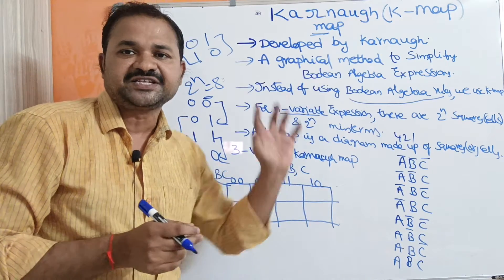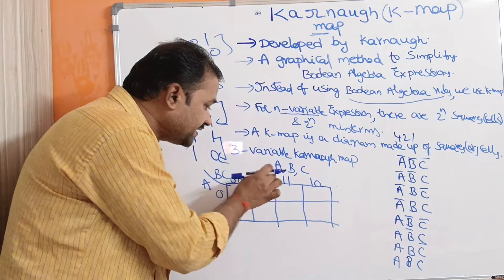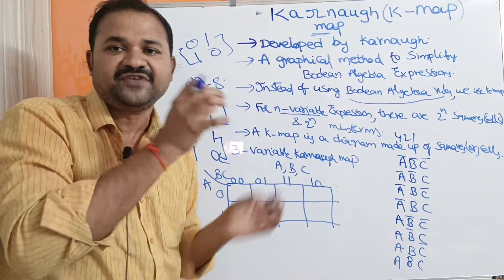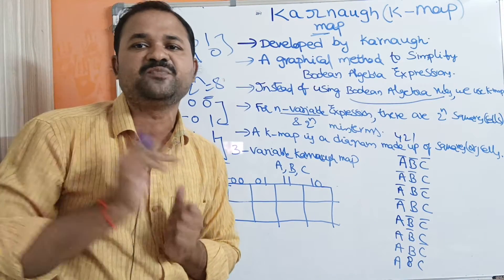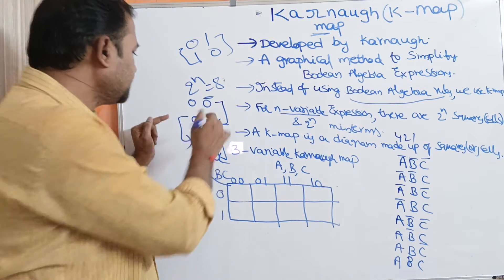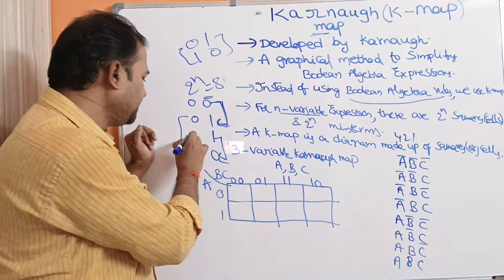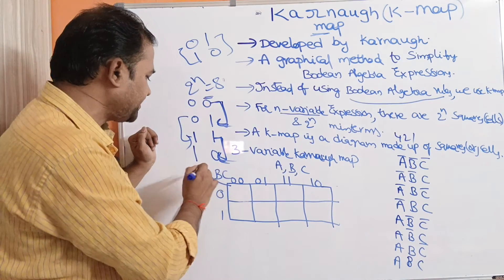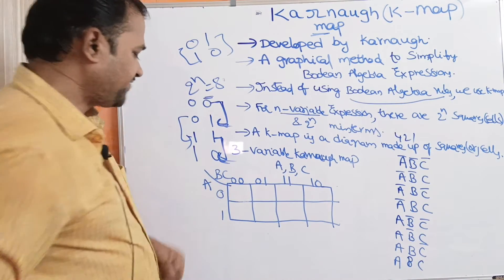If we consider any two adjacent cells, only one variable should be different. So for 0,0 and 0,1, only one variable is different. Likewise for every pair of adjacent cells across the map.